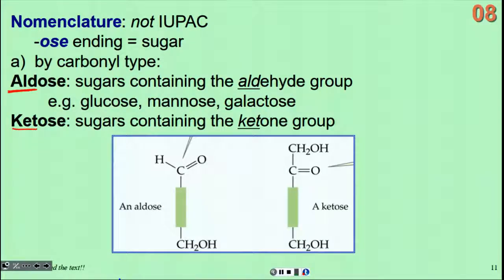The OSE ending tells us that these things are sugars. The first way we'll classify them or describe them or name them is by their types of carbonyls. Surprise, surprise - if you have an aldose it's going to have an aldehyde in it, and a ketose has a ketone in it. Notice whenever you have a ketose you're going to have two ends that are CH2OH, and an aldose only has one of them.